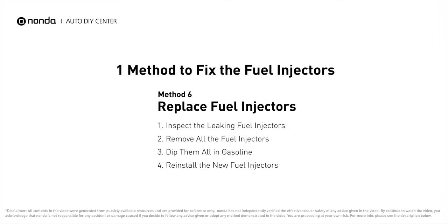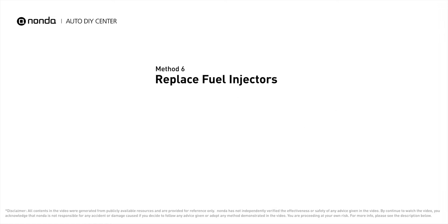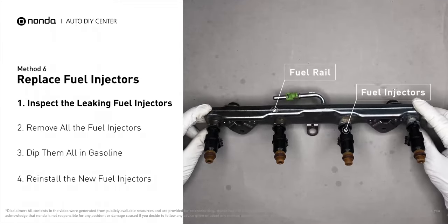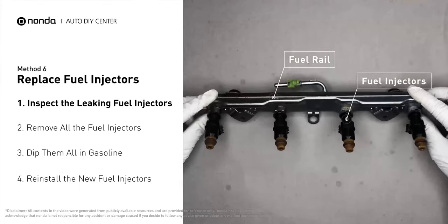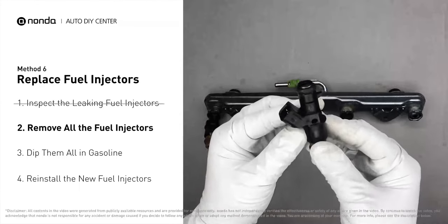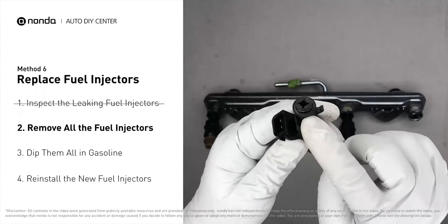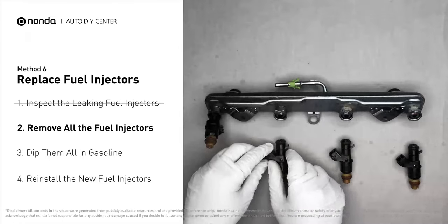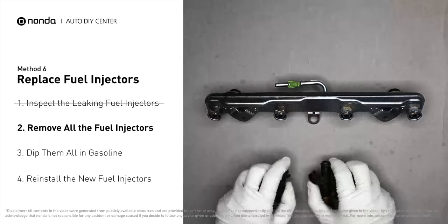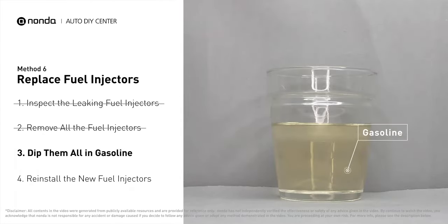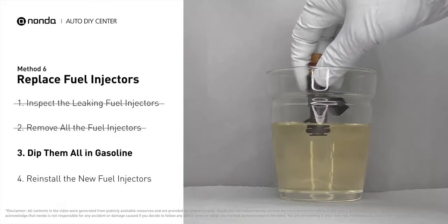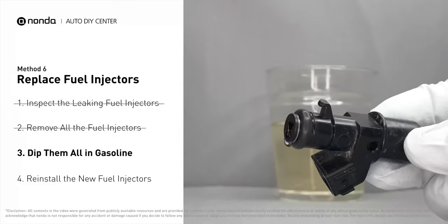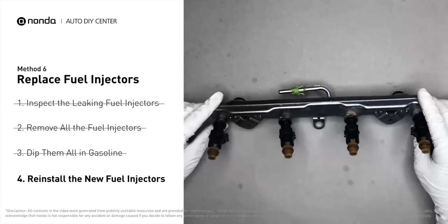Method 6: Replace Fuel Injectors. Inspect the leaking fuel injectors on the fuel rail, then carefully remove the fuel injector. Make sure the new injector has new seals — never reuse old seals. When you change the fuel injectors, change them all as a set; otherwise the engine will run unevenly. To prevent leaking, get some gasoline, put it in a cup, and dip the new fuel injector into it so the seals get wet with gasoline — this ensures it goes in without leaking. Then slide all the new fuel injectors in.